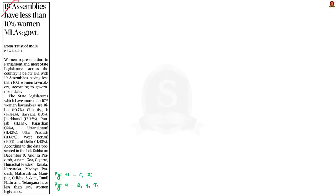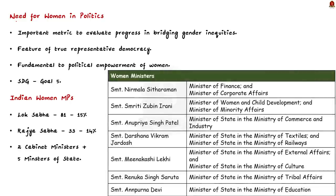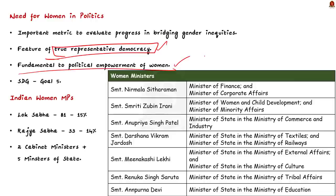The next news article provides crucial data on the representation of women in Indian parliament and state legislatures. Women's representation in the political sphere is an important metric to evaluate progress in bridging gender inequalities. It shows whether a country is a truly representative democracy, and legislative representation is fundamental to the political empowerment of women — it is even an important SDG under Goal 5. SDG Target 5.5 calls for women's full and effective participation and equal opportunities for leadership at all levels of political decision-making.